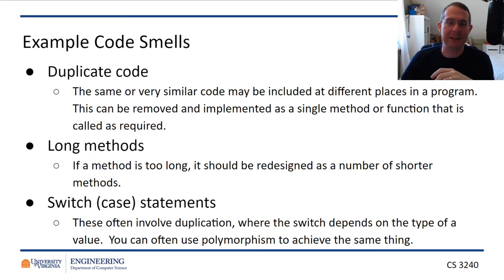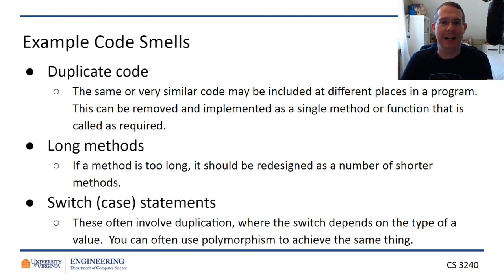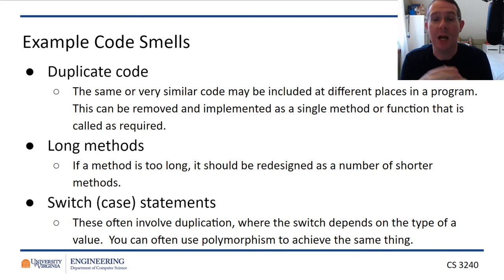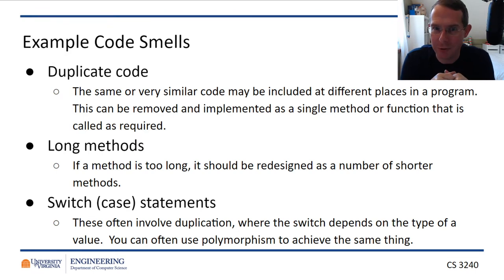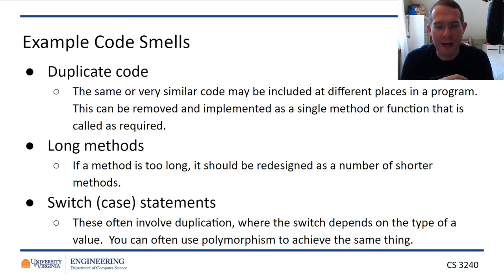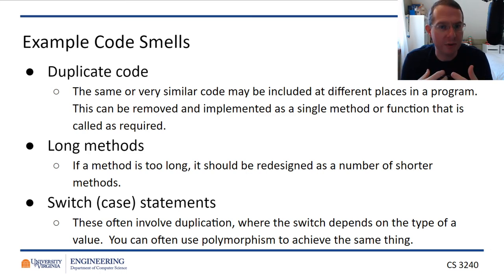For instance, duplicate code — maybe you have a for loop here, a for loop here, and a for loop here, and it's all the exact same code. Maybe you should turn that into a function. That way if you ever have to change that for loop, you only change it in one place. A long method — a method that is 150 lines of code doing a whole bunch of things is not a good module. Maybe we need to break that into two functions. Switch cases — maybe you have the if-statement of doom when it makes more sense to do a switch statement, or you have too many cases and can consolidate them.